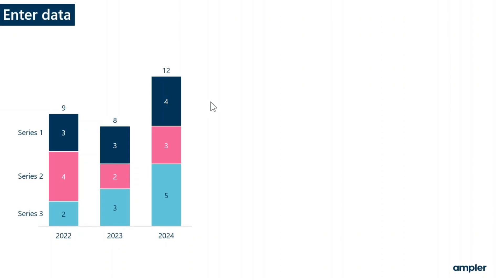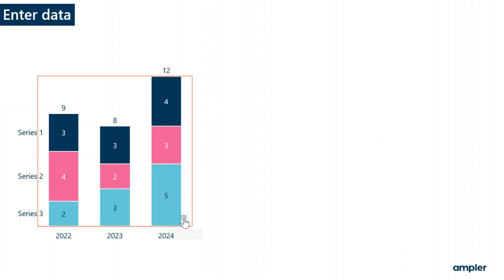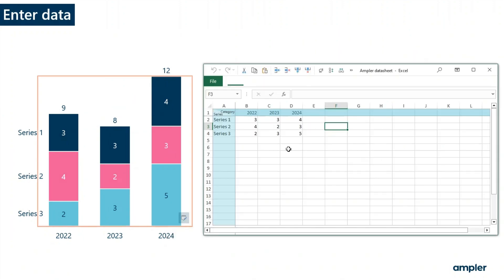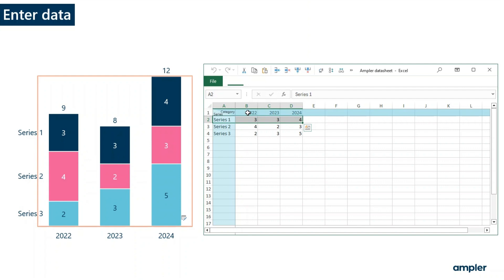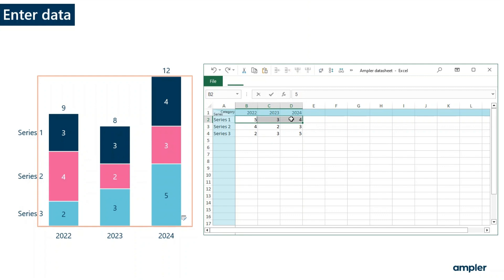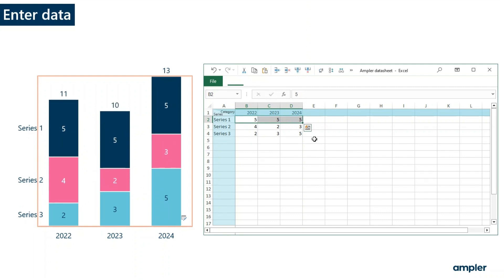To enter data to the chart, simply double click the chart area or go to edit data in Excel. The AmpliChart data sheet is structured in rows representing series and columns representing categories. To change the data in the chart, simply enter the data into the data sheet, and you'll see the chart automatically update.